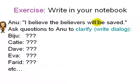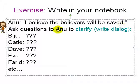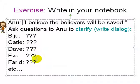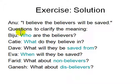You can try writing this in your notebook to understand how complicated a sentence can be. Anu says 'I believe the believers will be saved.' You need to ask questions to clarify what she means. Biju can ask 'Who are the believers?' Katie can ask 'What does saved mean?' Dave can ask 'Saved from what? When? And how?' So questions arise: Who are the believers? What do they believe in? What will they be saved from? When? What about the non-believers and the disbelievers? Is there a difference between people who don't believe in something and people who believe it is false? We'll look at that later.